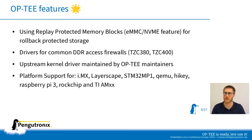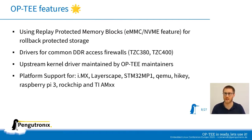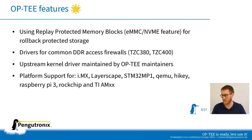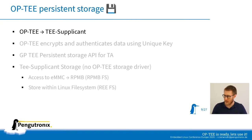Platform support currently includes i.MX6, i.MX7, and i.MX8 processors, Layerscape processors, STM32MP1, QEMU Versatile Express platforms, HiKey platforms, and Raspberry Pi 3. However, the Raspberry Pi 3 does not contain a DDR access firewall, making it unsuitable for real-world applications where secure world memory protection is required. There is also support for Rockchip and AM335x platforms.